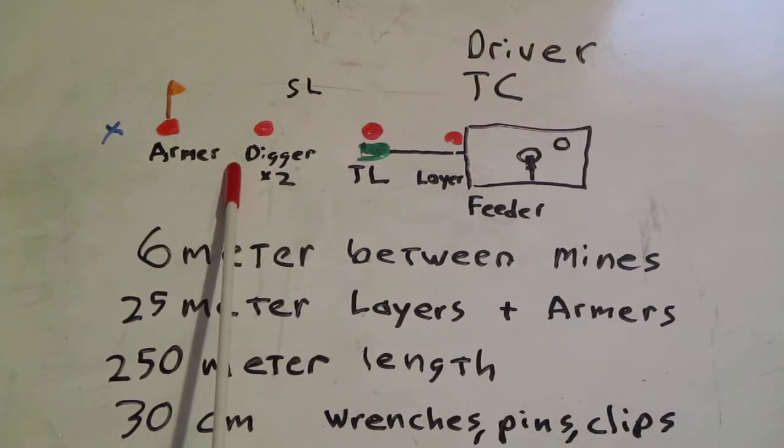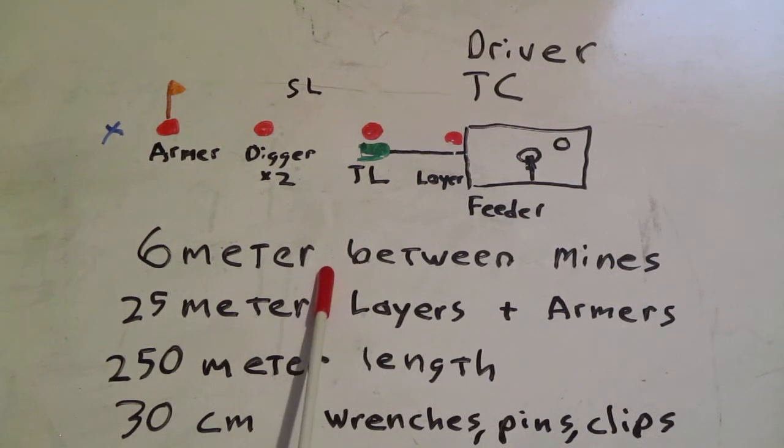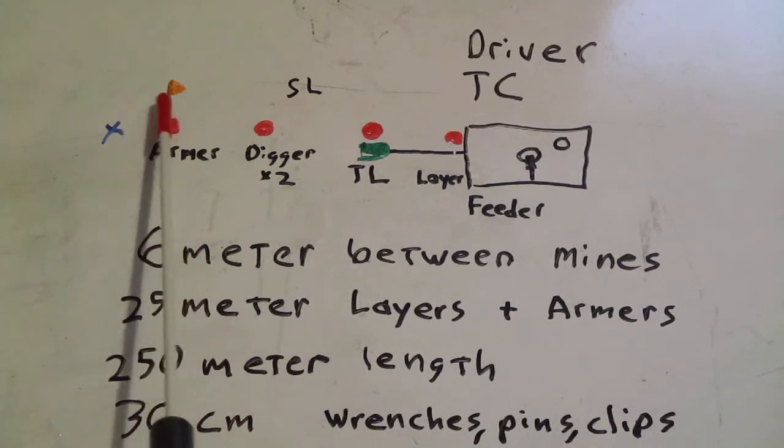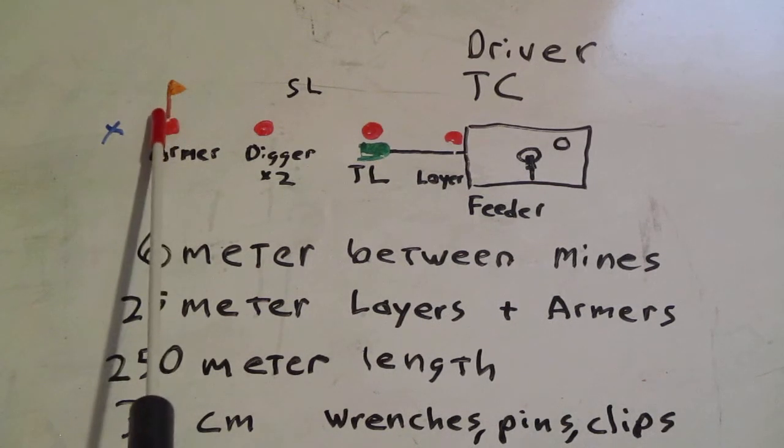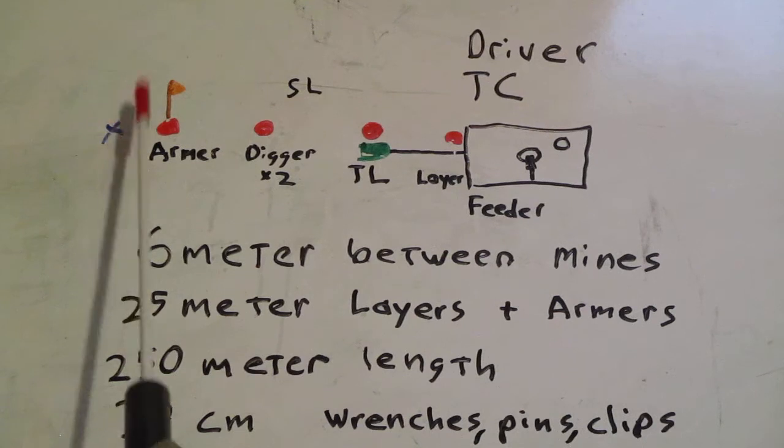Now just some quick notes here. Important measurements to know: It is six meters between anti-tank mines. There is 25 meters separation between the laying team and the arming team. Each mine row is 250 meters in length. And the position for the sandbag with the wrenches, pins, and clips is 30 centimeters from that start point, that start row marker. So 30 centimeters from that, a hole is dug. The sandbag that the squad leader was given is put in the hole and it is buried.